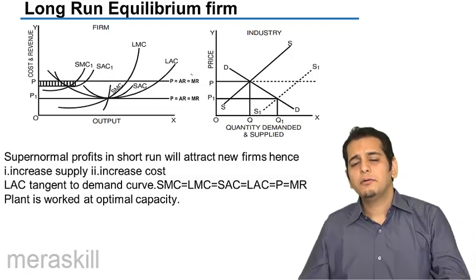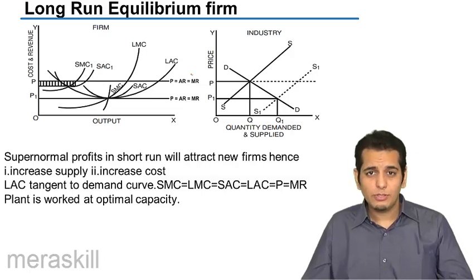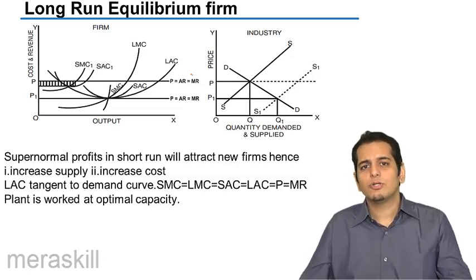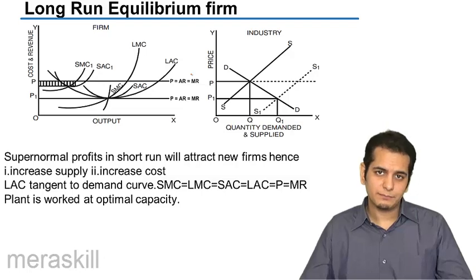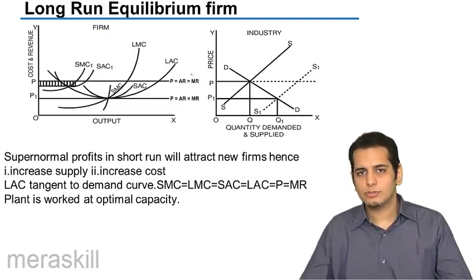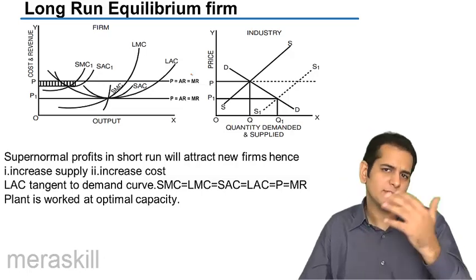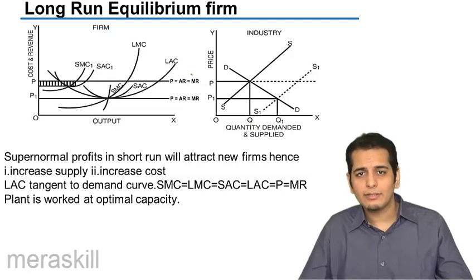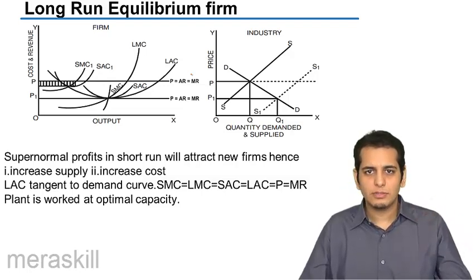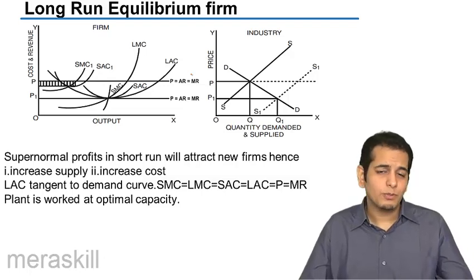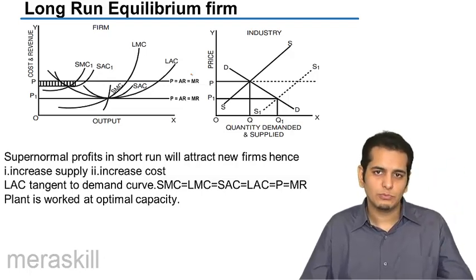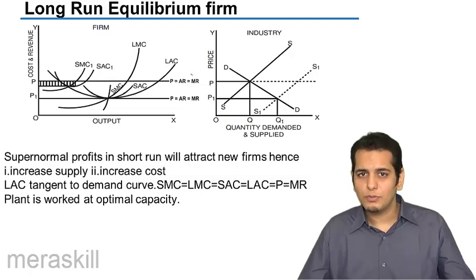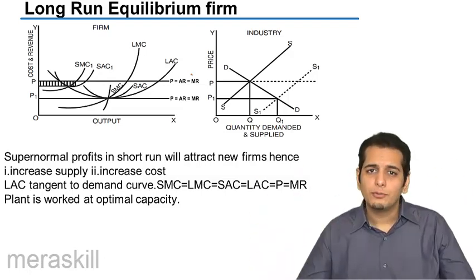The firm is earning supernormal profits. When the firm is earning supernormal profits, other firms also get attracted to the market. Let's say you are in a business which has enormous supernormal profits — don't you think it will attract other people to your business? Your friends, relatives, neighbors, and other persons who know you will get attracted. In the same manner, when a firm is earning supernormal profits, other firms also try to enter the market.